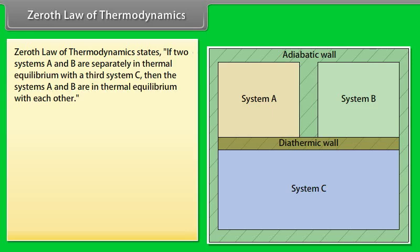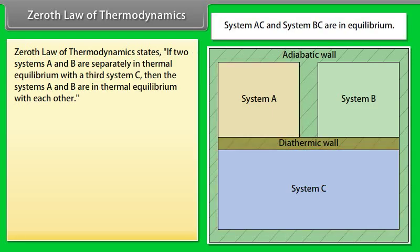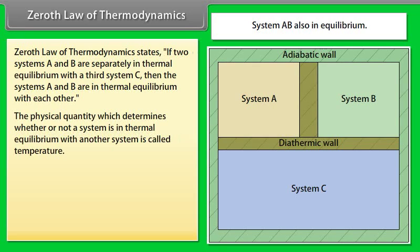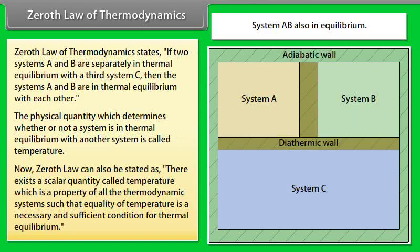Zeroth Law of Thermodynamics states: if two systems A and B are separately in thermal equilibrium with a third system C, then systems A and B are in thermal equilibrium with each other. The physical quantity which determines whether a system is in thermal equilibrium with another is called temperature. Zeroth Law can also be stated as: there exists a scalar quantity called temperature, such that equality of temperature is a necessary and sufficient condition for thermal equilibrium.